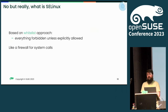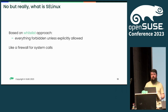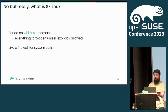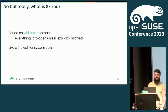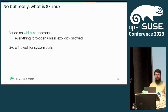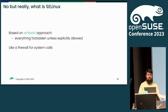Another characteristic of SELinux is that it's based on a whitelist approach. By default, everything is forbidden and you can only allow the specific things you've thought about and that make sense. You can think of it like a firewall for system calls — nothing can go through except what you've specifically allowed.